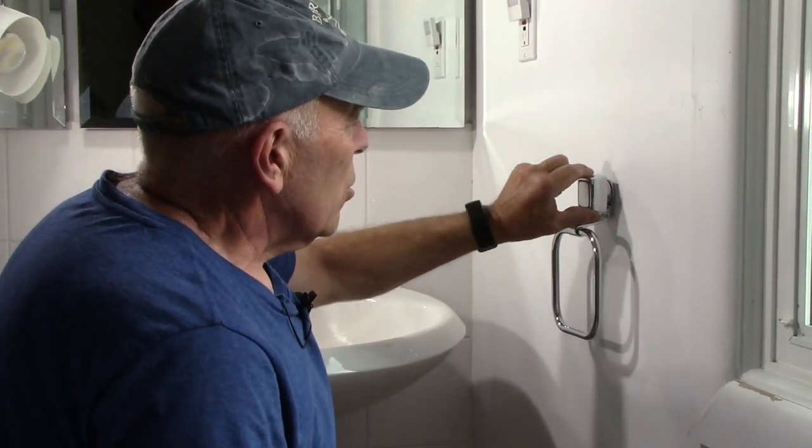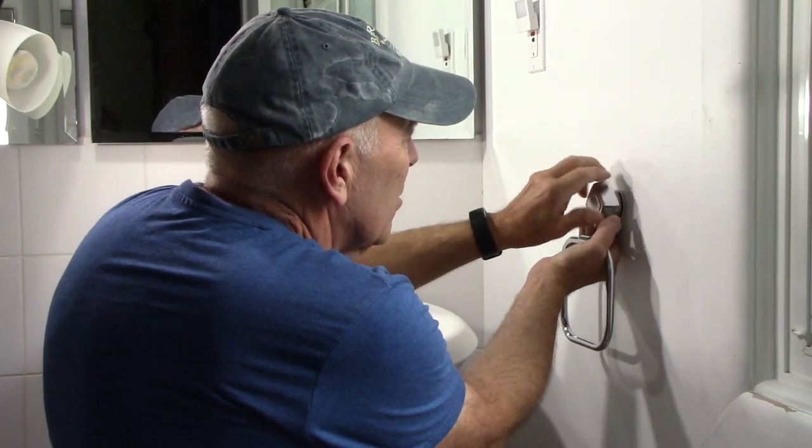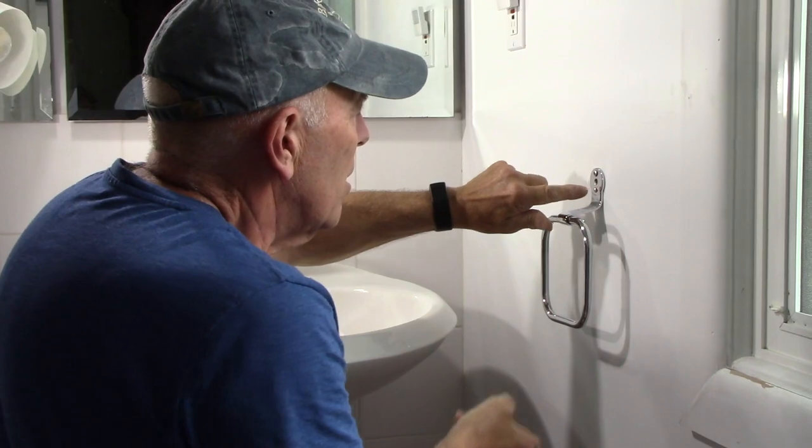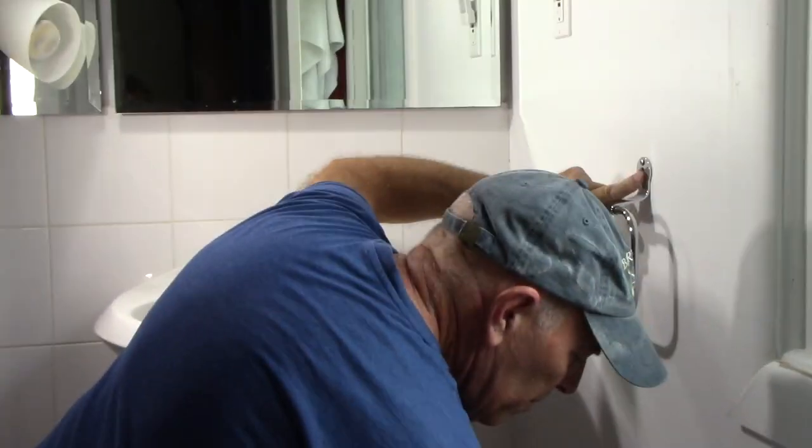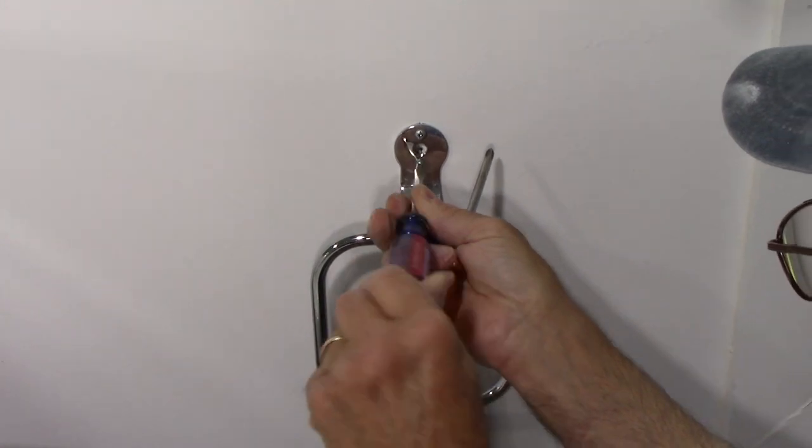Now this particular one, we just unscrew this piece right here and when we unscrew it, it'll give us access to the Phillips head or flathead screws that hold it to the wall itself. All right, so let's take these out and we'll see what we have underneath here.